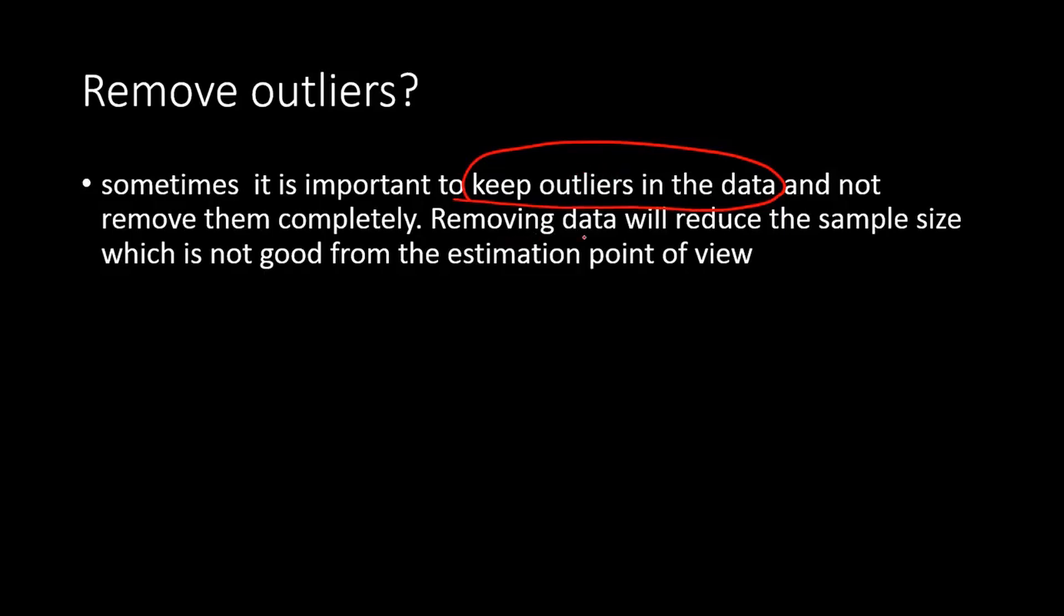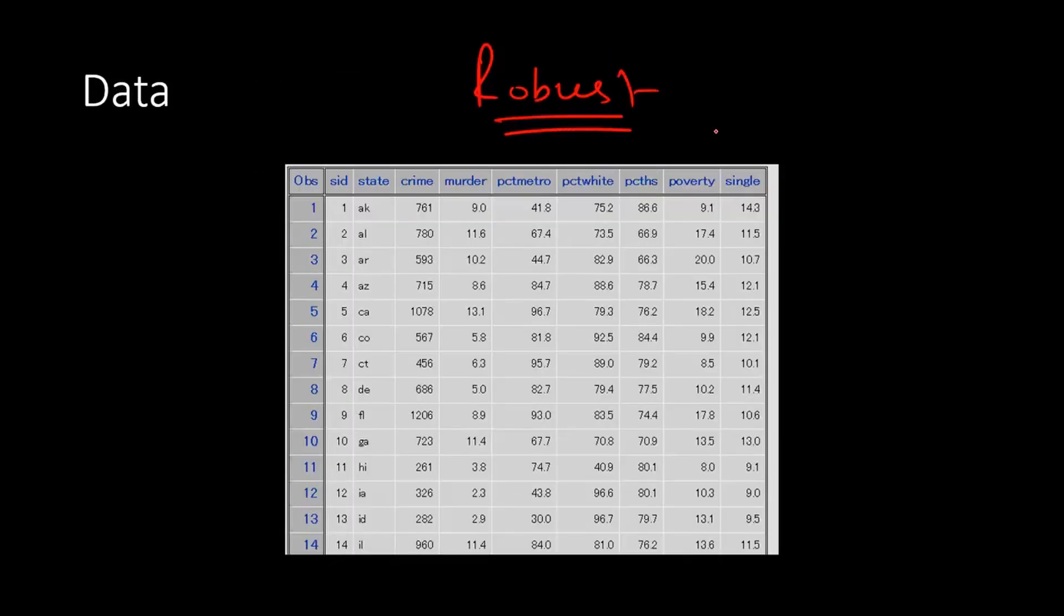If you remove some of these data points, it will reduce the sample size. So from the estimation point of view, removing outliers many times is not good, especially in small sample studies. Many times you can actually go ahead and remove outliers. In those cases, you need not use robust regression.